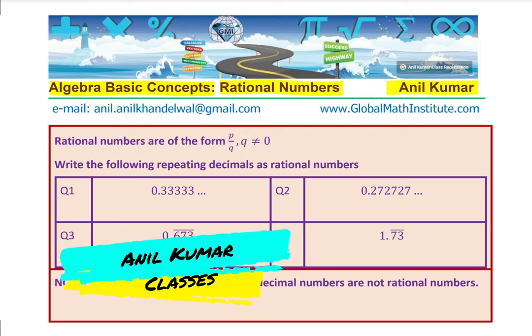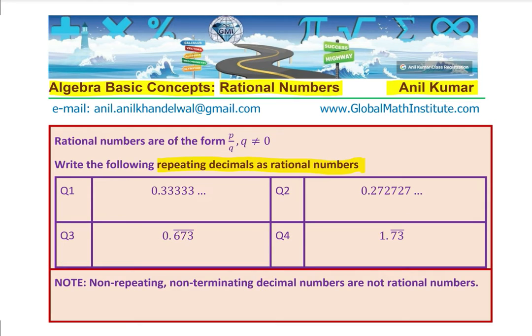So the question for you is: write the following repeating decimals as rational numbers. Repeating decimals are rational numbers. We are going to understand a strategy for how to write them in the form of P over Q where Q is not equal to zero. I have taken four examples here: 0.3333 repeating,